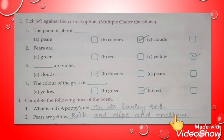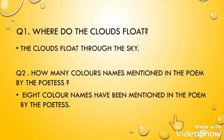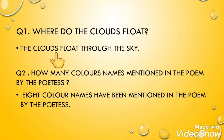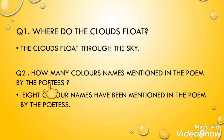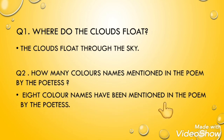Now we are going to discuss the question answers. The first question is: where do the clouds float? The clouds float through the sky. Question number 2: how many color names are mentioned in the poem by the poet? Eight color names have been mentioned in the poem by the poet.